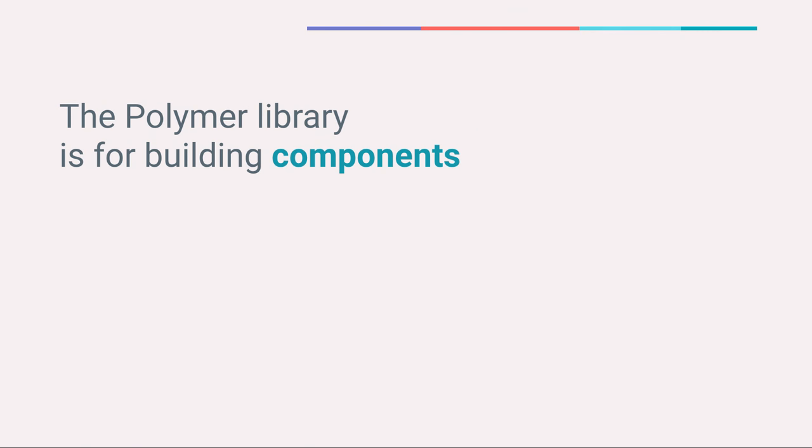The Polymer library is for building components. Major companies and major Google products are adopting and building components. But they're not just building components — they're building applications out of these components. And so we get this question asked a lot: web components are great, but how do I take these web components and construct an actual application?